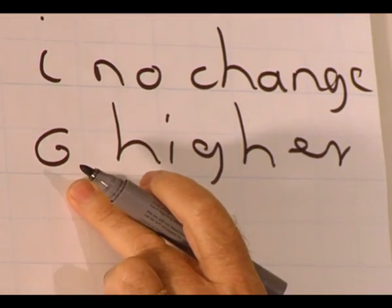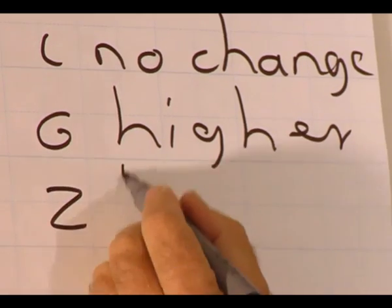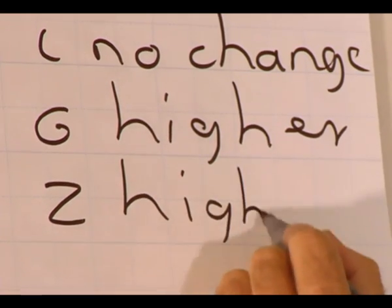When government spending increases, the demand for goods and services will also increase. So Z, the demand for goods and services is higher.